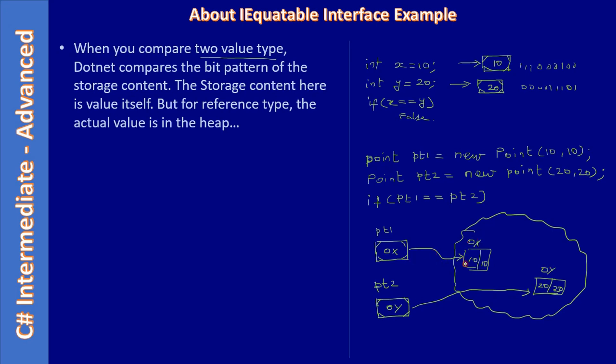In 0x we have two compartments to store 10, 10 (the x, y coordinates). In 0y we have two compartments to store 20, 20.